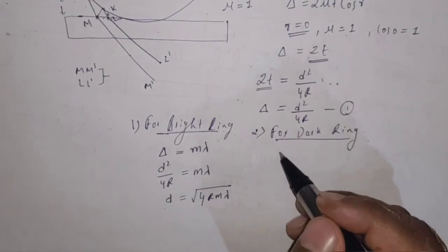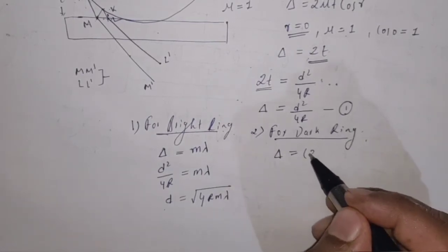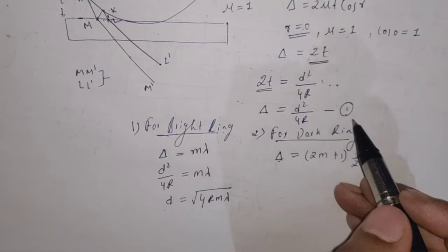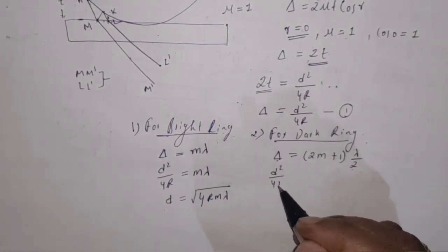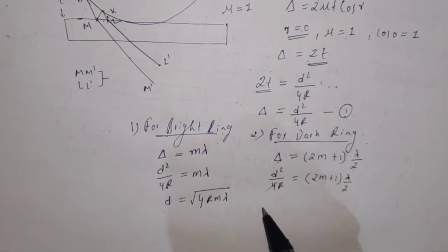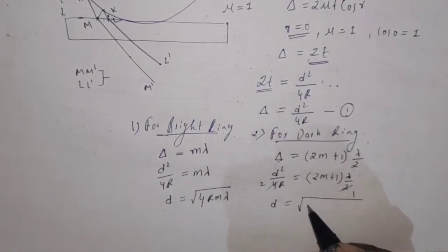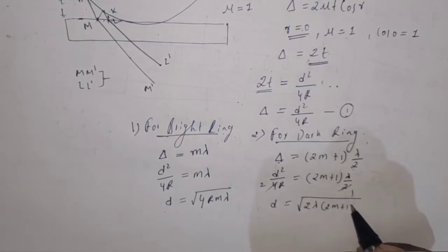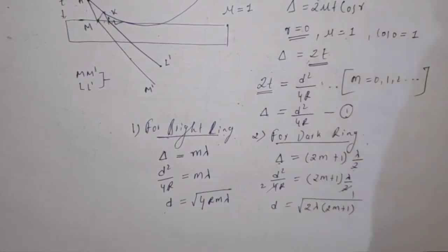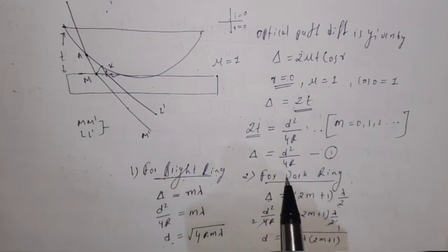For dark rings, the path difference is given by delta equals (2m + 1) times lambda over 2. Substituting delta from equation 1, we get D squared divided by 4R equals (2m + 1) times lambda over 2. Solving, the diameter of a dark ring is D equals the square root of 2 lambda times (2m + 1), where m equals 0, 1, 2, 3, and so on.